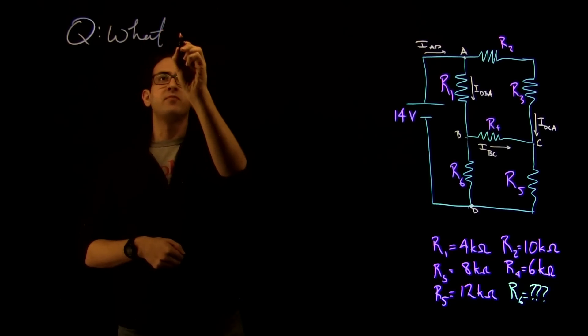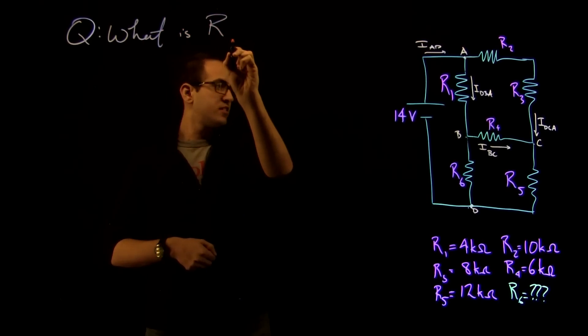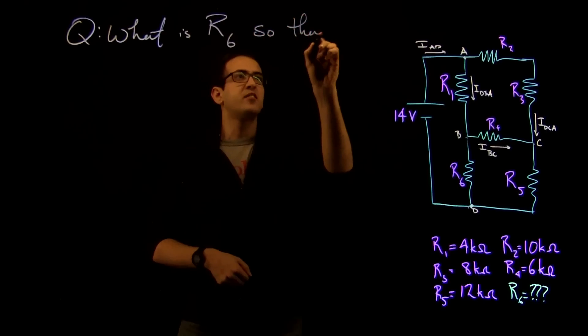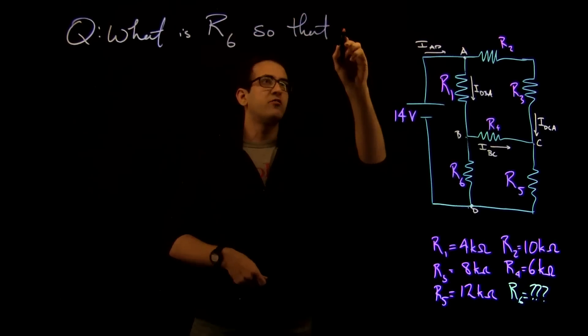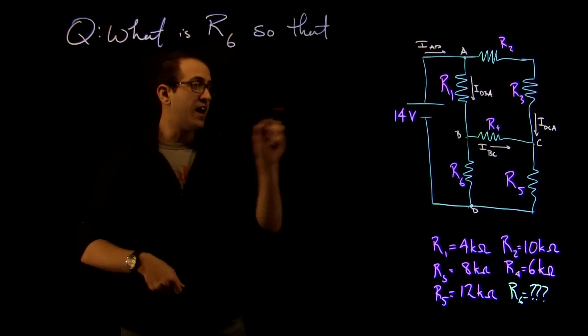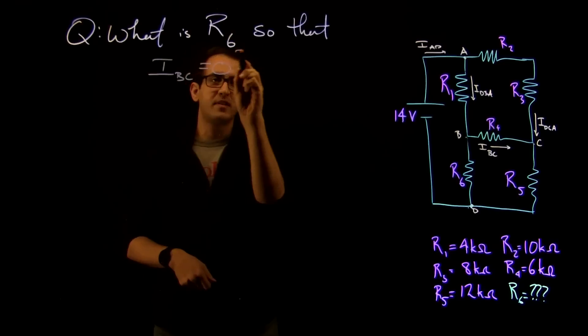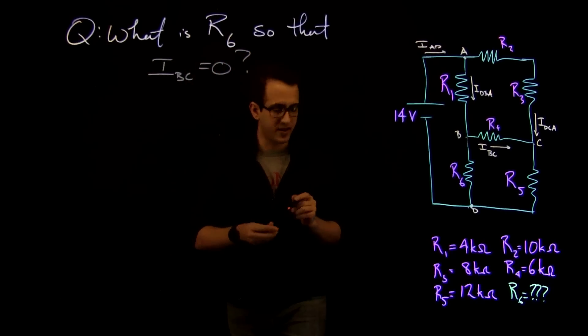So our question is, what is R6 so that IBC is zero?